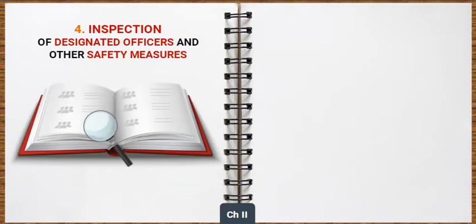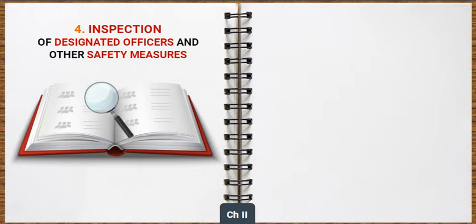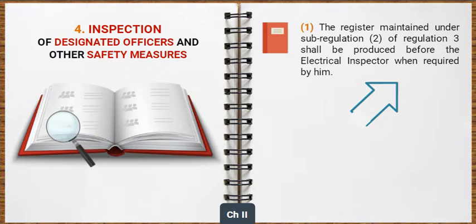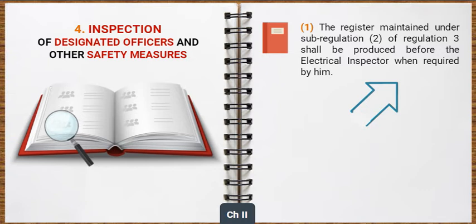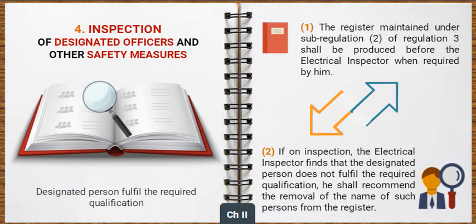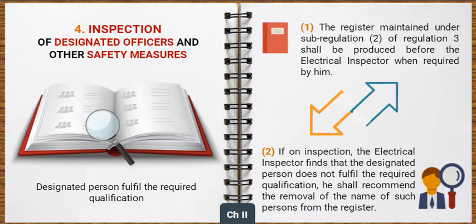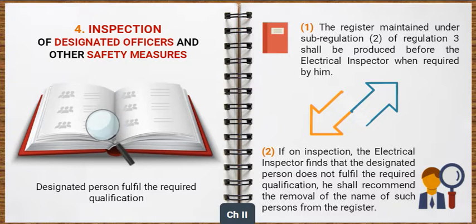The register maintained under sub-regulation 2 of regulation 3 shall be produced before the electrical inspector when required by him. If on inspection the electrical inspector finds that the designated person does not fulfill the required qualification, he shall recommend the removal of the name of such person from the register.